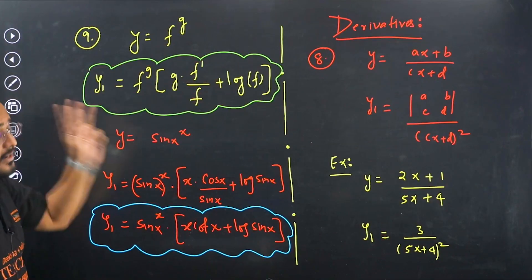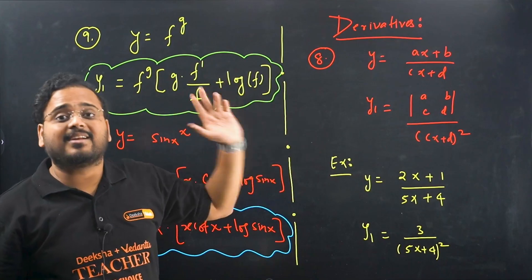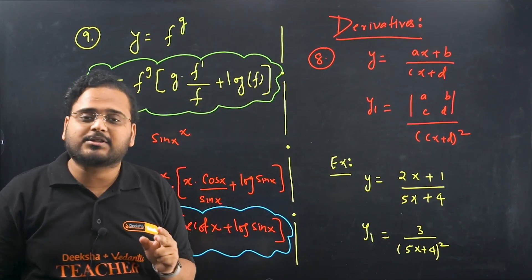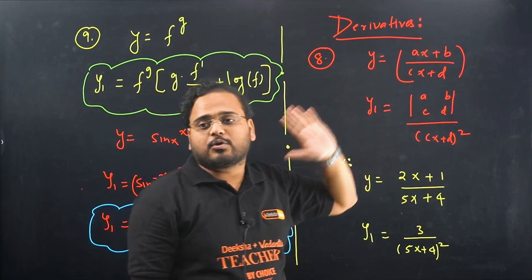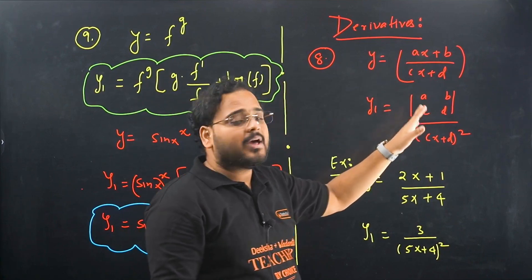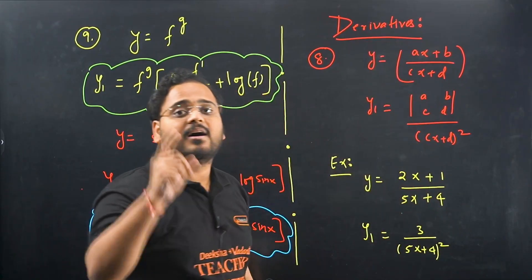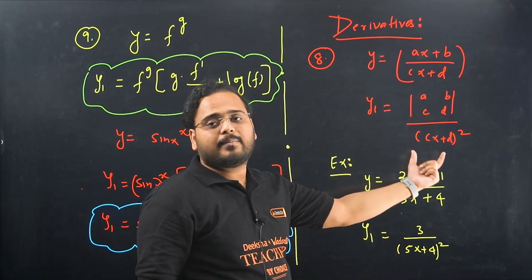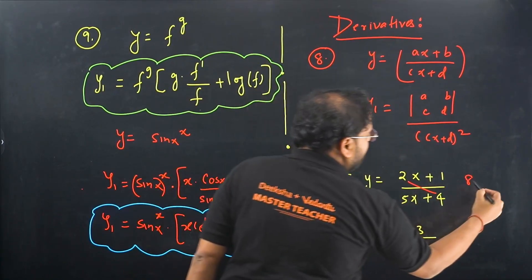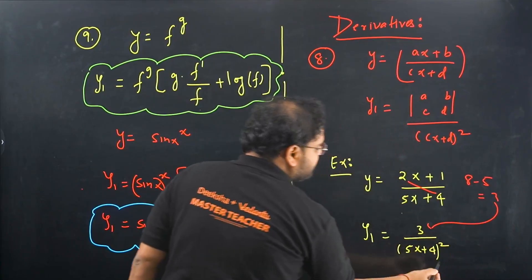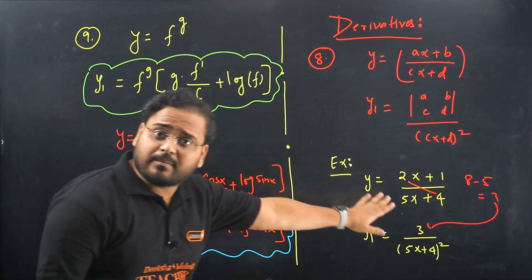Tricks 8, 9, 10 cover derivatives, which carry even higher weightage. Trick 8: For the quotient rule with linear functions (ax + b) / (cx + d), instead of applying the full quotient rule, simply find the determinant of the coefficient matrix — (ad - bc) — divided by the denominator squared. For example, (2x + 1) / (5x + 4): determinant is 2·4 - 1·5 = 3, answer is 3 / (5x + 4)².